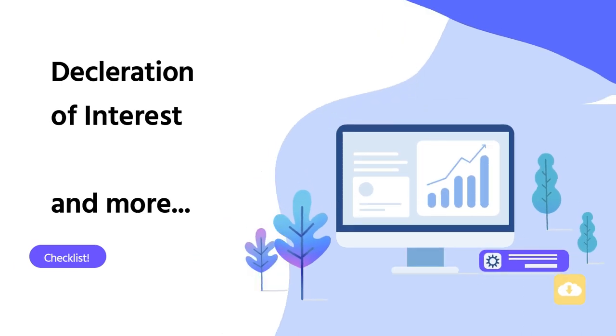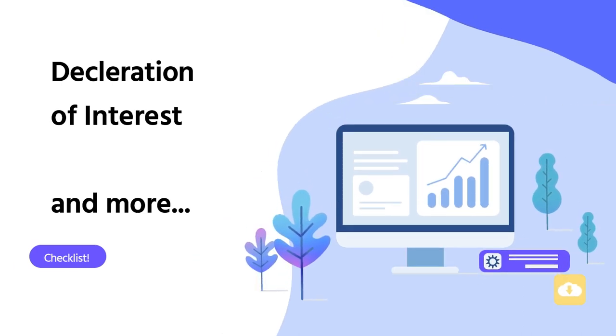Quite often there'll be a second checkbox saying please upload a declaration of interest. This is essentially you declaring that yourself and your co-authors haven't got any competing interests that could bias or affect the particular paper that you're uploading.